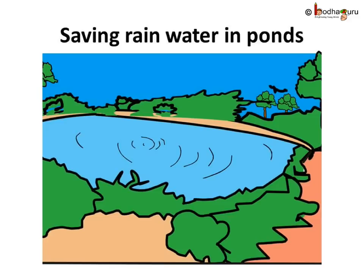But there are a few disadvantages of making a dam for storing water. It destroys wildlife, displaces people from their homes, and the water reservoir loses its depth over time due to accumulation of silt and sand.